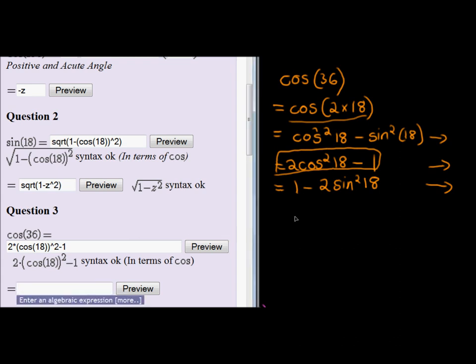So now that, in terms of z, would simply be 2 cos of 18 is z squared minus 1. 2 z squared minus 1. Preview. Great stuff. 2 z squared minus 1.